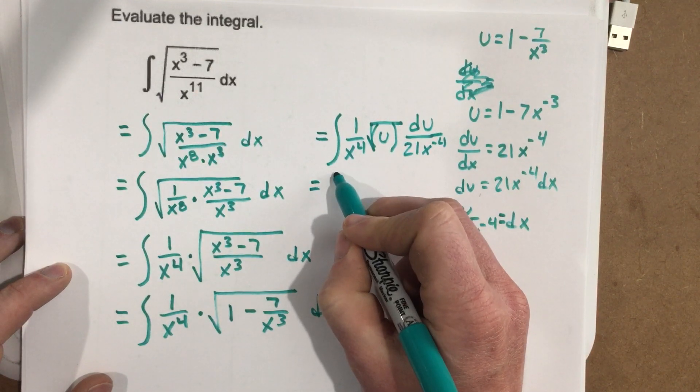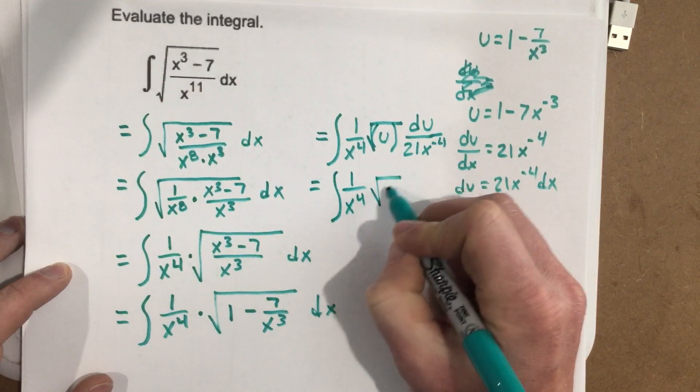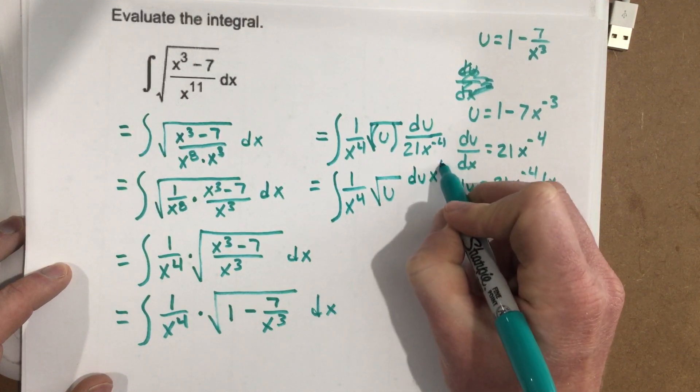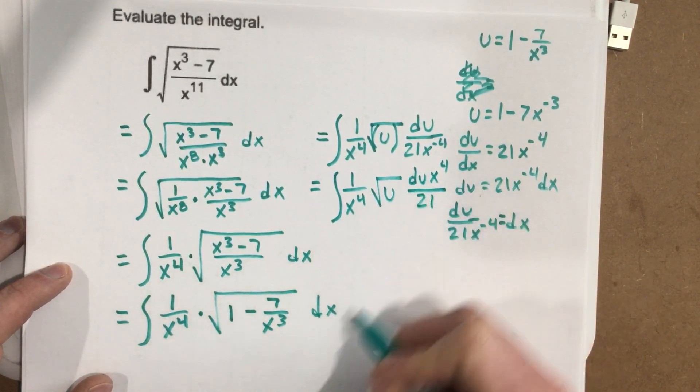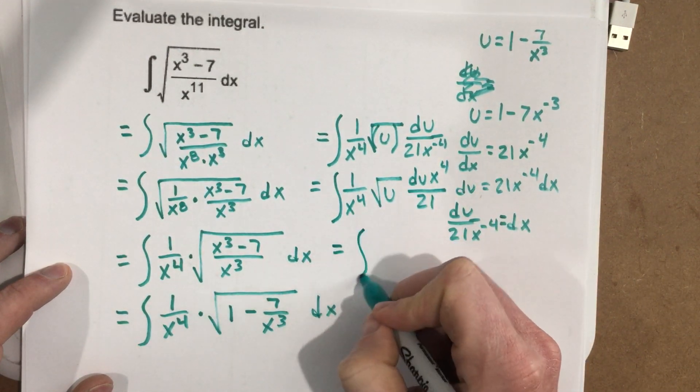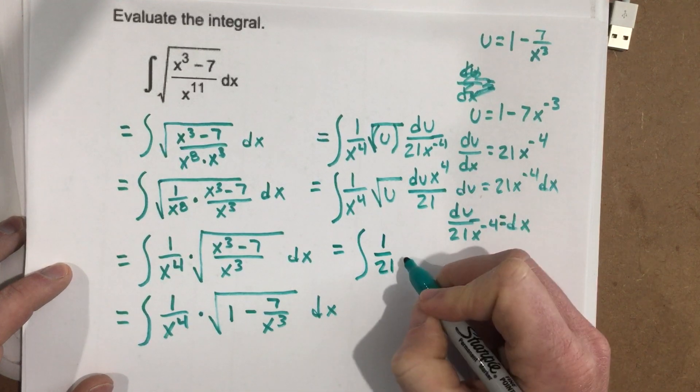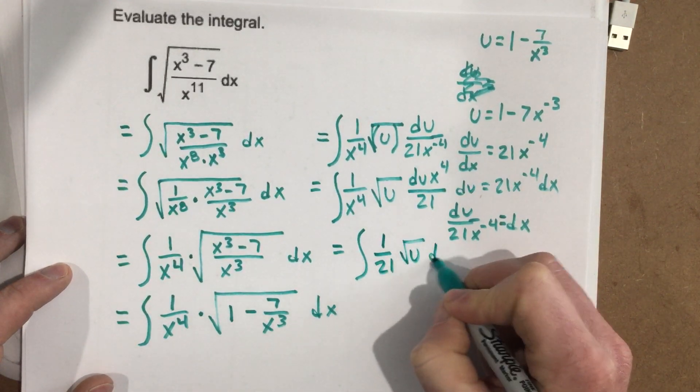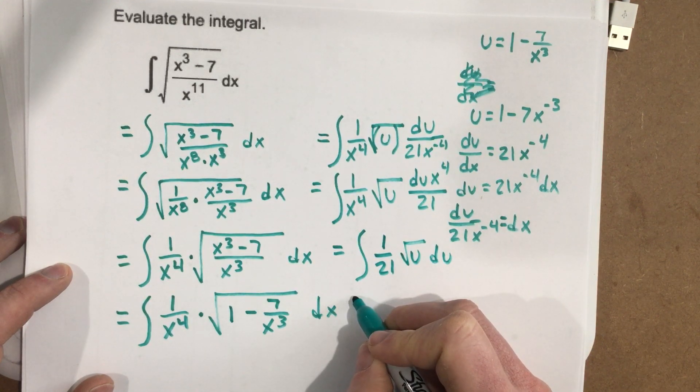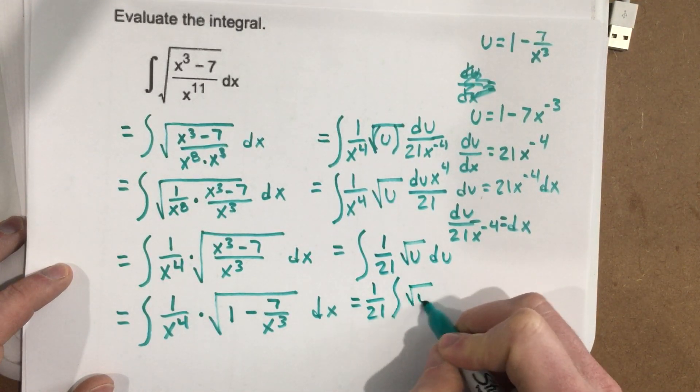So if I rewrite all this, that's actually integral 1 over x to the fourth root u, I bring the x to the fourth to the top, I have du x to the fourth over 21. You'll see the x to the fourth cancel there. So that's going to be integral. When the x to the fourth cancel, I'm left with 1 over 21 root u du, which then I can write that as 1 over 21 integral root u du.